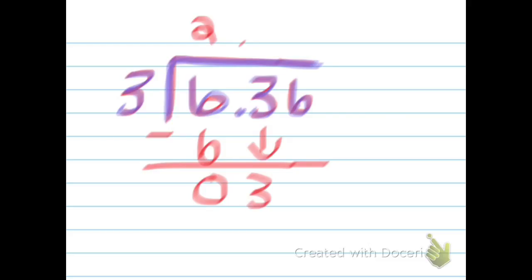Now, I know that 1 times 3 equals 3. So I'm going to put the 1 up here and then multiply. 1 times 3 is 3. Then I'm going to subtract 3 minus 3, which is 0, and then I bring down my 6.